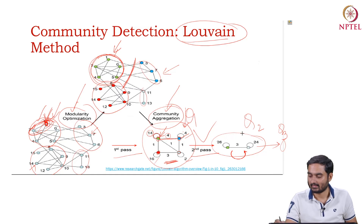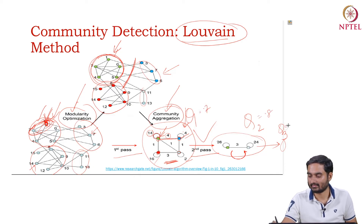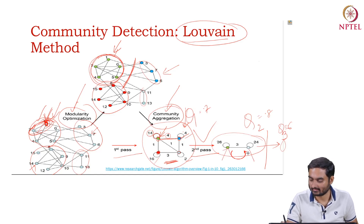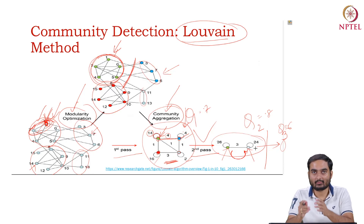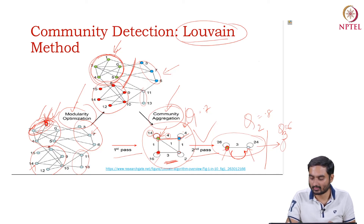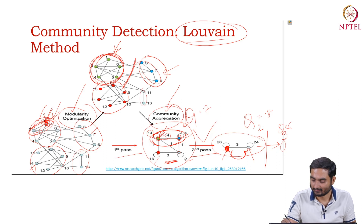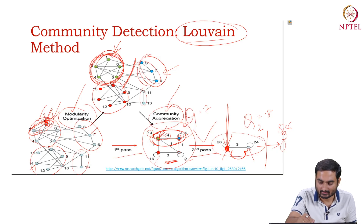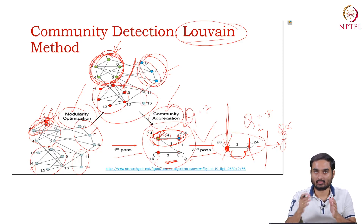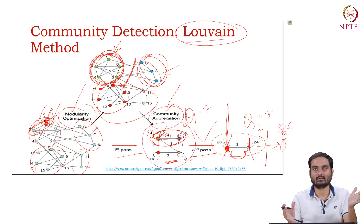We stop when two consecutive passes show no increase in modularity value. If Q1 is 0.7, Q2 is 0.8, but Q3 is 0.6, we stop at Q2. We then know there are two communities — say the green community and the ash color community. We unfold it: the super node was formed from two nodes in the previous iteration, and those nodes were formed from earlier communities. We keep aggregating and stop when there is no further improvement, then unfold to get the actual community structure.